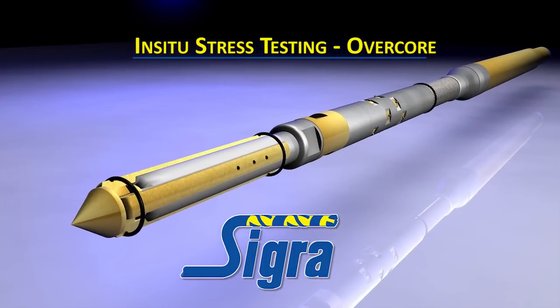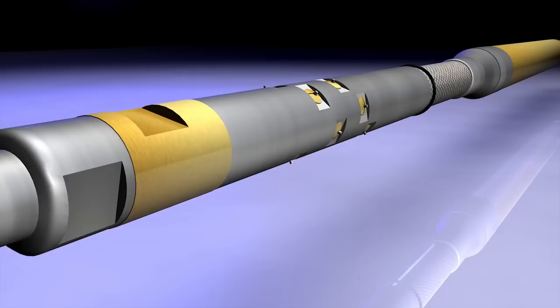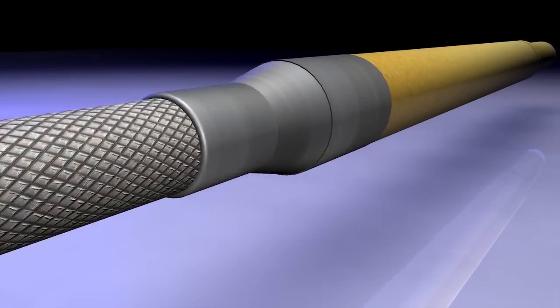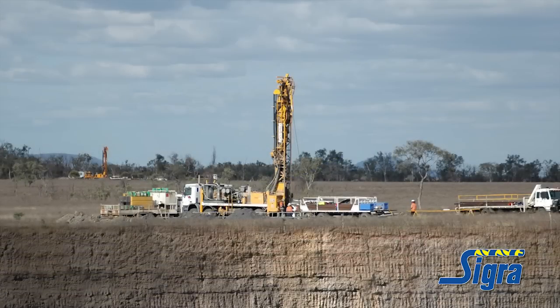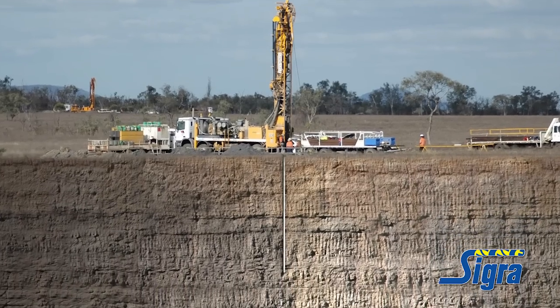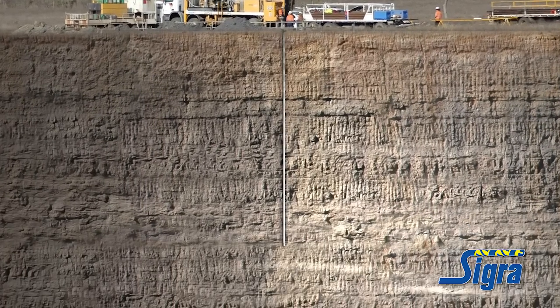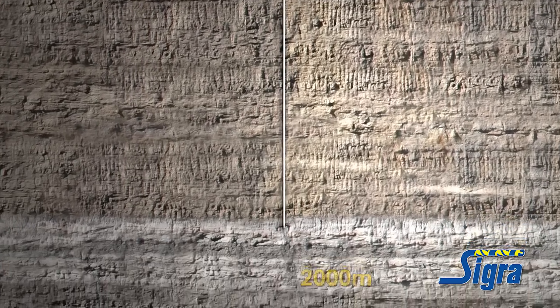SIGRA measures in-situ rock stress primarily by the use of its proprietary in-situ stress tool which operates by the over-coring method concurrently with HQ coring from the surface. It's suitable for holes up to a depth of 2,000 metres for mining, civil and petroleum engineering purposes.